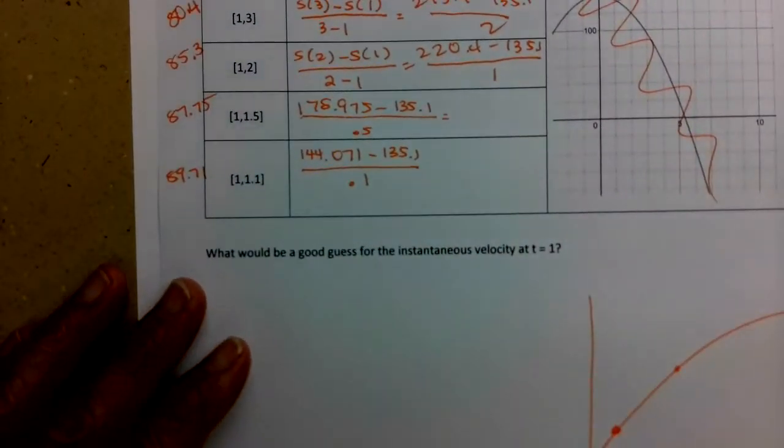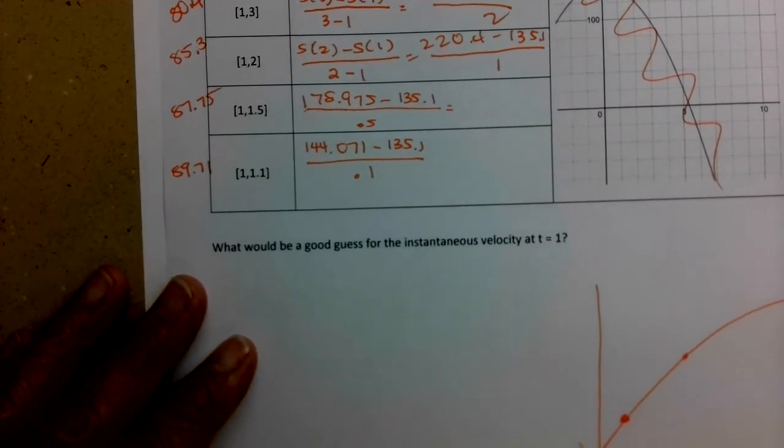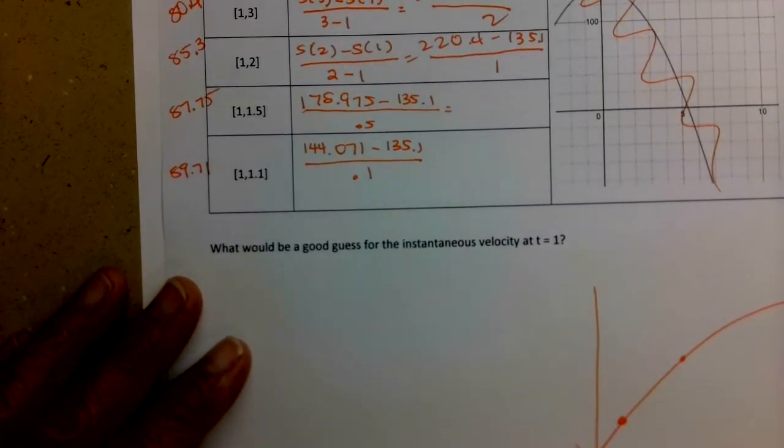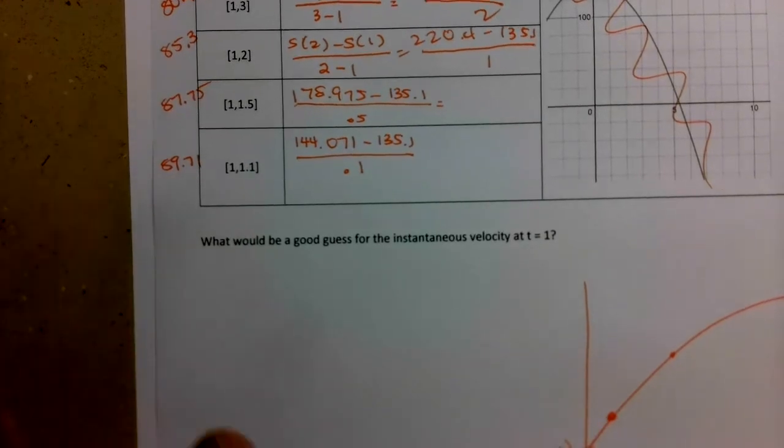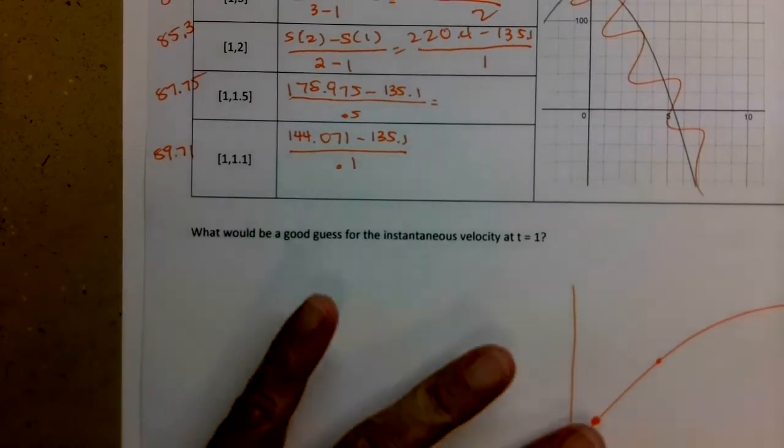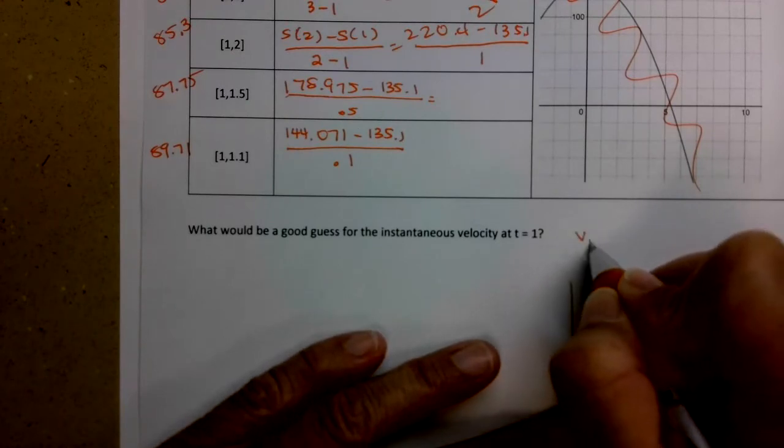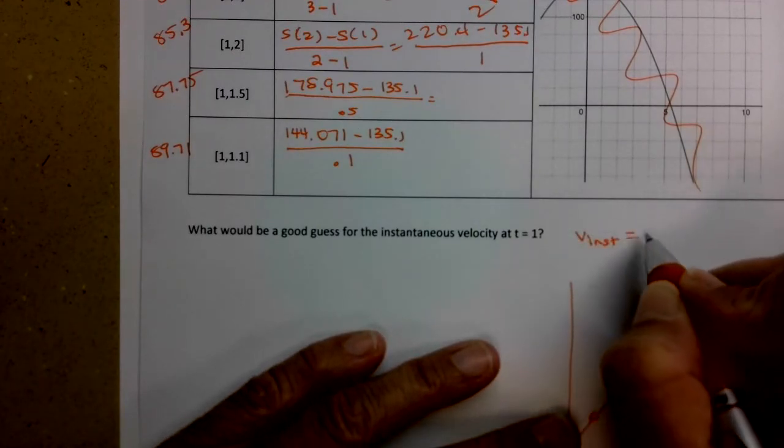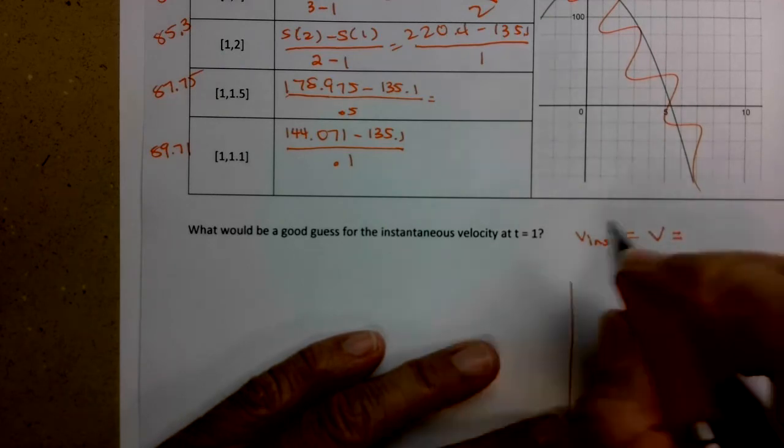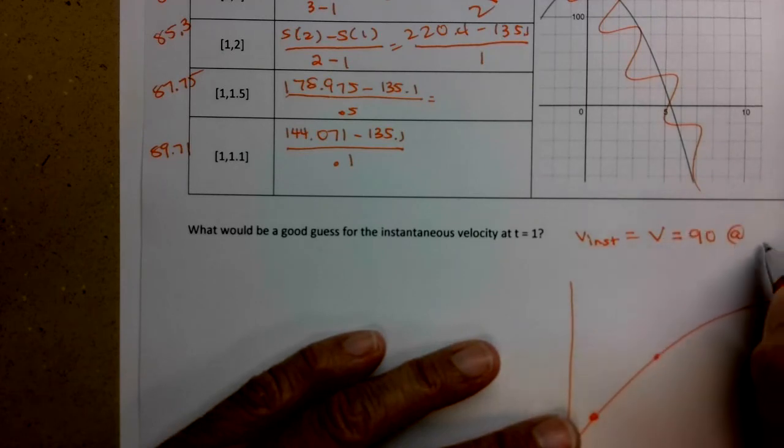Does it look like they're headed towards any one particular value? Well, they certainly are. I'm just not sure. I see it now. Maybe 90 would be my guess. The average velocity at t equals 1 would be about 90 because they keep getting kind of bigger, but maybe it's going to go above 90. But we tend, if we're going to guess, so v instantaneous, typically when we say that, we mean v, just the plain old velocity. I'm going to guess it's 90 at t equals 1.